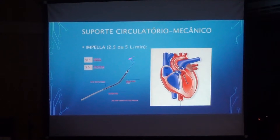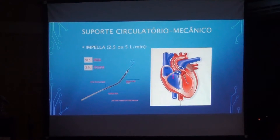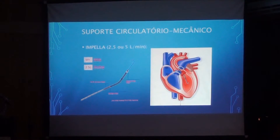The Impella is a device that must be used with great brevity because it causes significant hemolysis. It is implantable and delivers 2.5 or 5 liters per minute — the 2.5 being hemodynamically less significant. The device sits in the left ventricle, aspirating at the tip and returning flow to the aorta. The flow increment is small, but this device is used when performing hemodynamic procedures involving the left coronary and you want to provide greater ventricular support. It should be removed after the procedure because of hemolysis.